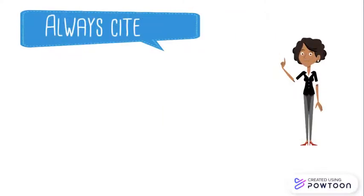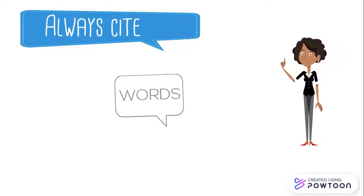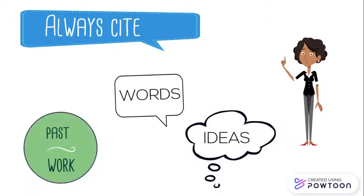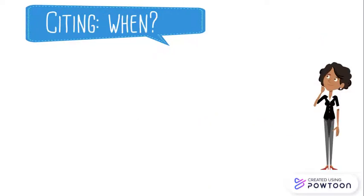Let's begin with what you always need to cite. You must provide a reference any time you use someone else's words or their ideas. You even have to cite yourself if you reference work you've submitted in the past. Now this sounds clear enough, but can be a bit confusing in practice. Let's look at some specific examples.